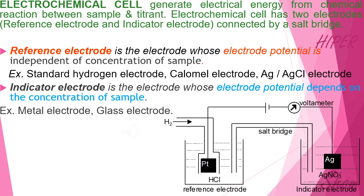Indicator electrodes are the electrodes whose electrode potential changes with the concentration of the sample. Examples of indicator electrodes include the metal electrode and the glass electrode.